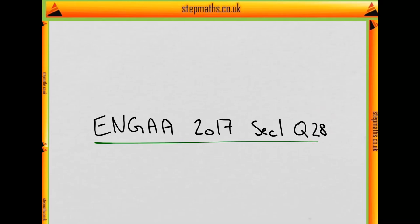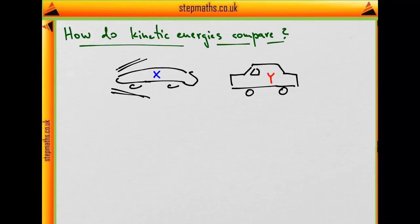This is question 28 from the 2017 Engineering Admissions Assessment. In this question we have two cars which we know some information about, namely their relative masses and speeds, and we are supposed to find how the kinetic energies of them compare.